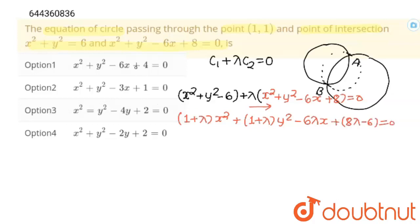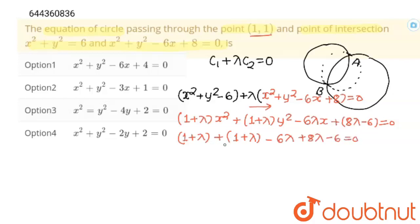This circle passes through (1, 1), so (1, 1) will satisfy this equation. I am going to put x = 1 and y = 1 to get the value of lambda. So 1² gives 1, (1 + lambda)·1 gives (1 + lambda), then −6·lambda + 8·lambda − 6 = 0. Simplifying: 2 + 4·lambda − 6 = 0, which gives 4·lambda − 4 = 0, so lambda = 1.